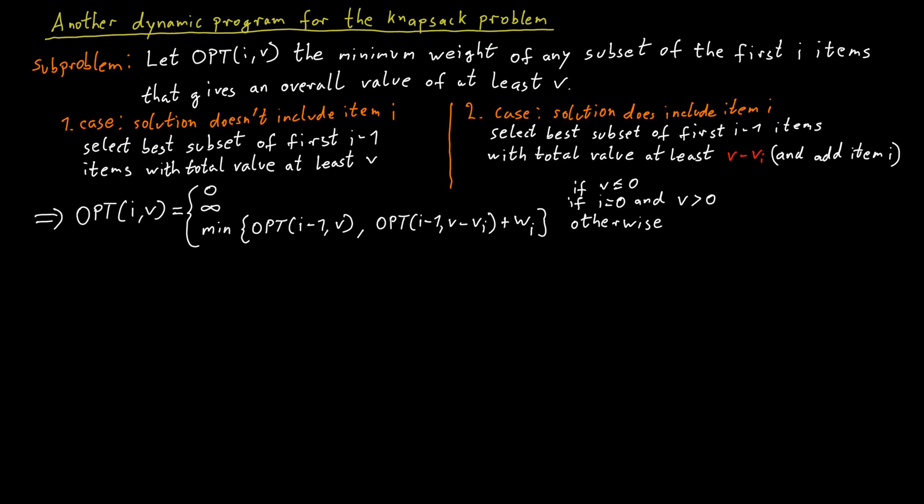Next, we have to ask ourselves what is the running time of this dynamic program. As before, we can simply picture this dynamic program as filling in the values in a big table. We start with the first column and then systematically fill in values for columns moving to the right. Filling in a single value in the table takes constant time. Then the running time of this algorithm is simply the size of the table.